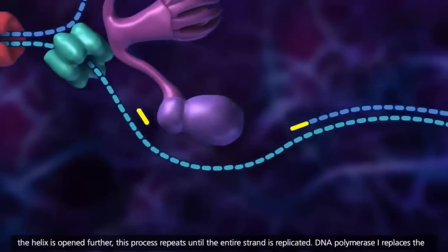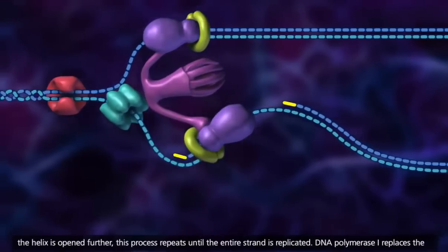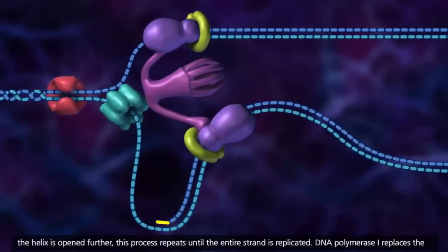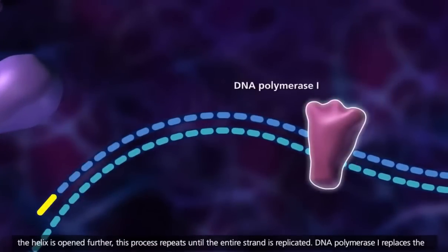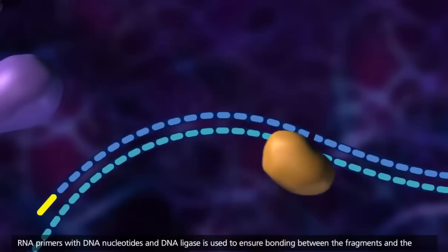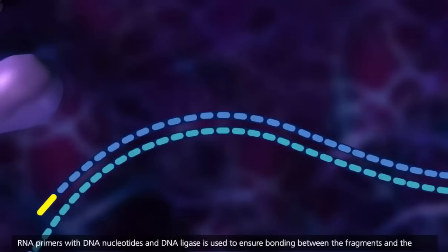As the helix is opened further, this process repeats until the entire strand is replicated. DNA polymerase 1 replaces the RNA primers with DNA nucleotides, and DNA ligase is used to ensure bonding between the fragments and the replaced nucleotides.